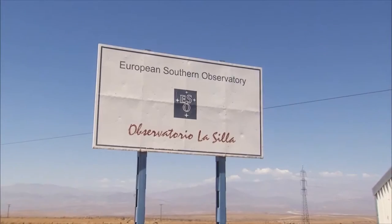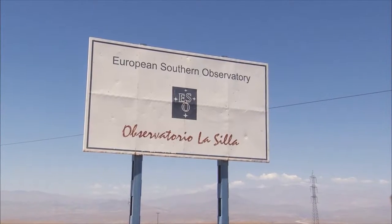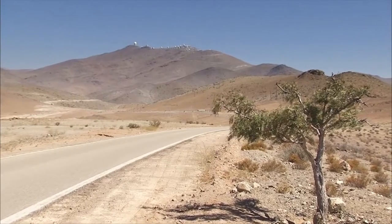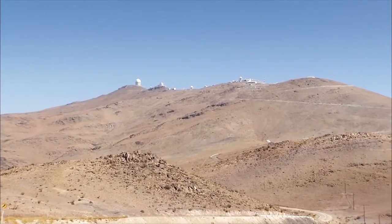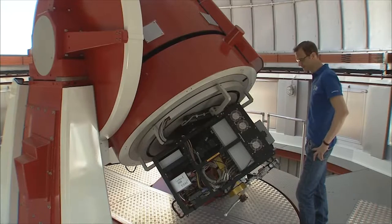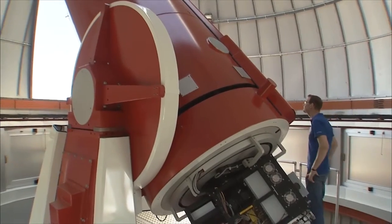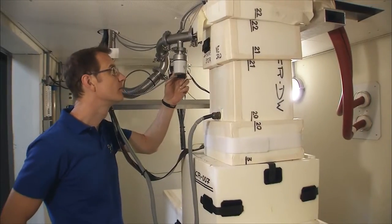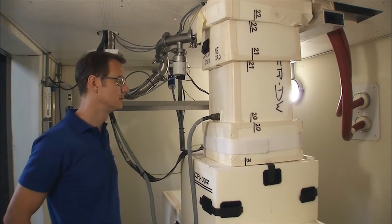The European Southern Observatory plays an important role in the search for exoplanets. Michel Mayor's team found hundreds of them from Cerro La Silla, ESO's first Chilean foothold. Here's the Coralie spectrograph, mounted on the Swiss Leonard Euler Telescope. It measures the tiny wobbles of stars caused by the gravity of orbiting planets.